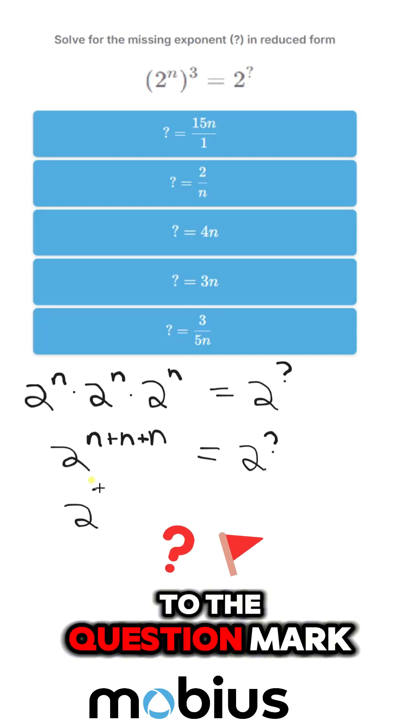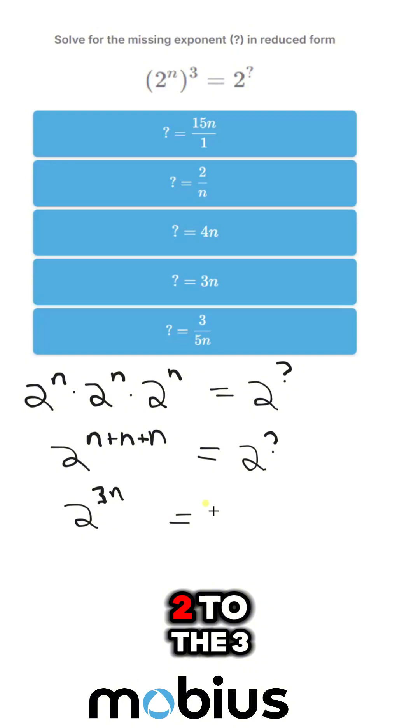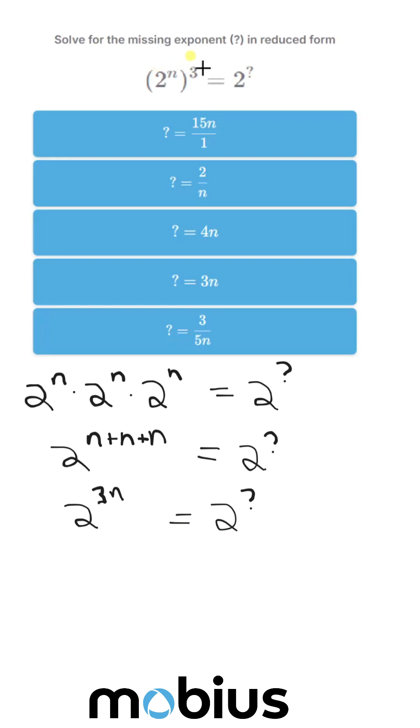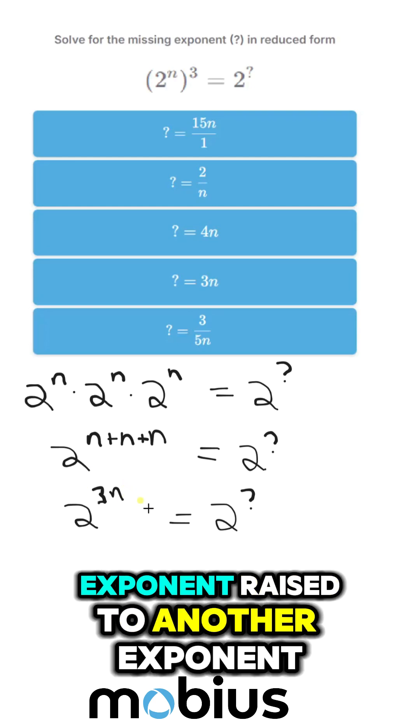Or in simpler language, 2 to the 3n is equal to 2 to the question mark. And that's a common rule: if you have an exponent raised to another exponent, you multiply them to create a single power.